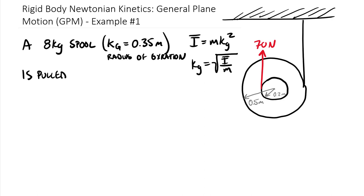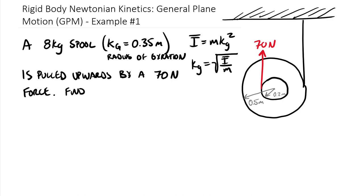The 8 kilogram spool is pulled upward by a 70 newton force. We want to find the cable tension and the angular acceleration alpha.